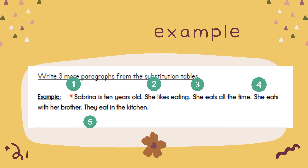Kita ada 5 ayat dari 5 jadual tadi. Number 1: Sabrina is 10 years old. She likes eating. She eats all the time. She eats with her brother. They eat in the kitchen. So we have 5 sentences. You just need to copy.